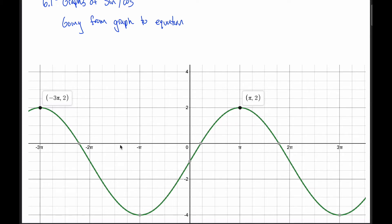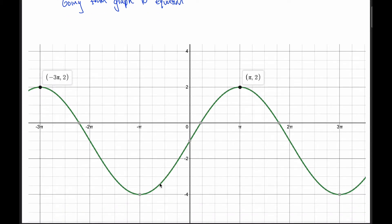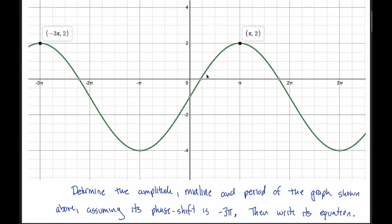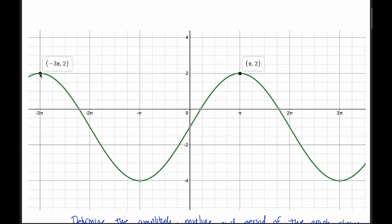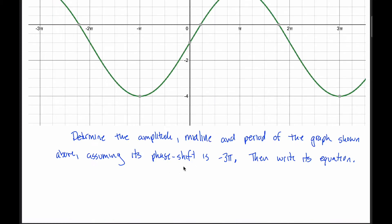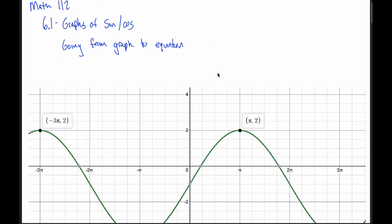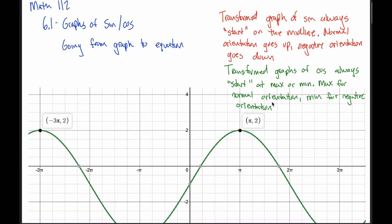So what I'm going to do when I test you on these is ask the question like this: I'll ask you to determine the amplitude, the midline, and the period of the graph, and I'll tell you the phase shift. So in this case, maybe I'm telling you the phase shift is negative three pi. I'll specify what I want you to use as the starting point. As long as I specify the phase shift, our answers will be exactly the same when I ask you to write the equation. We're going to take a lot of the ideas from the previous video and apply them here.